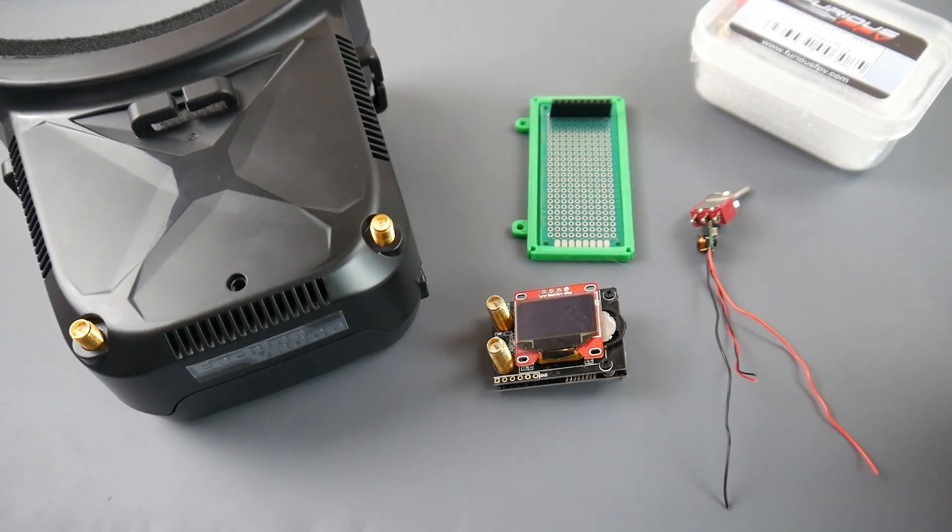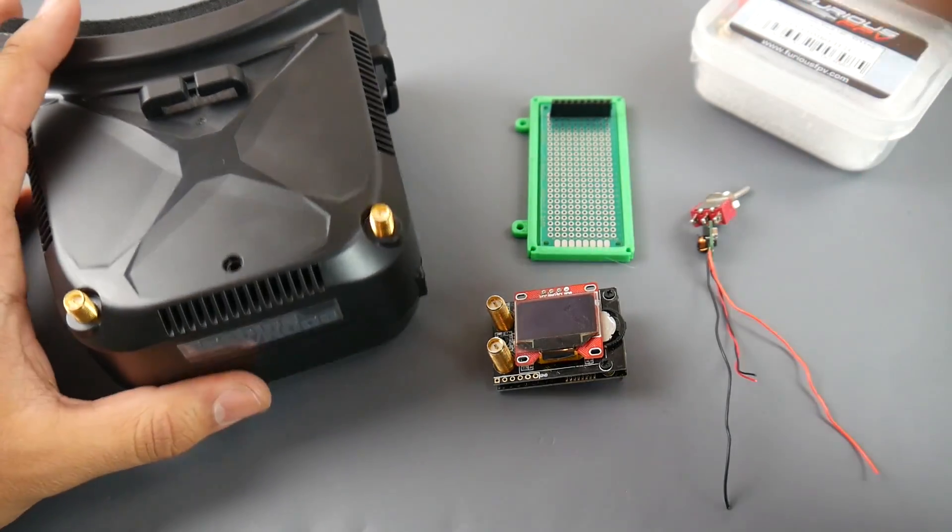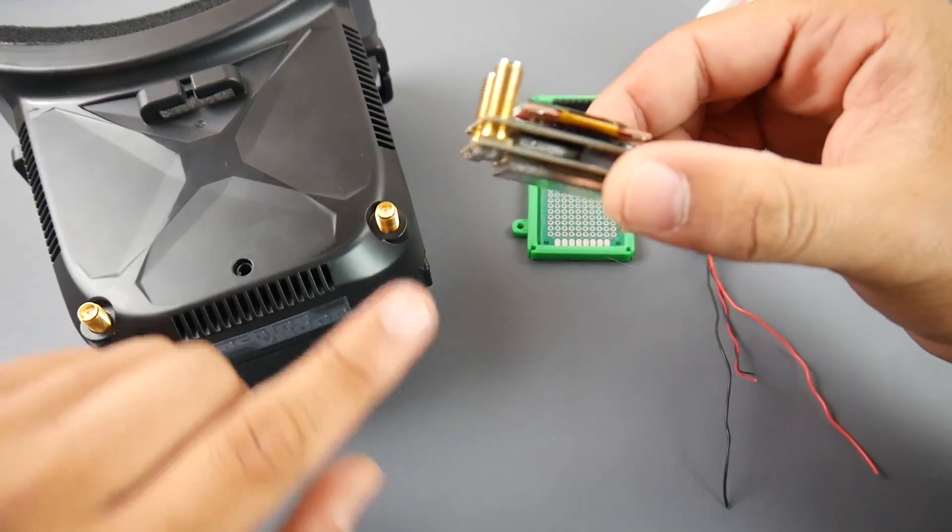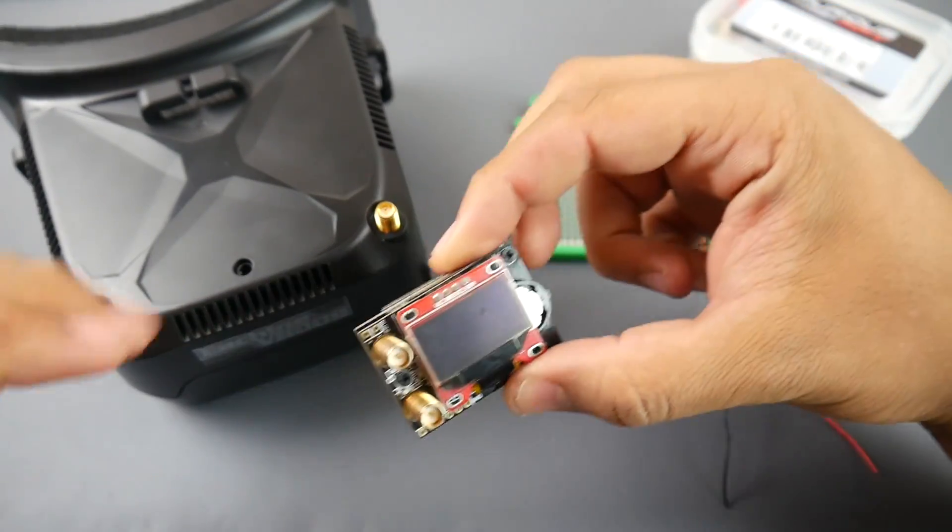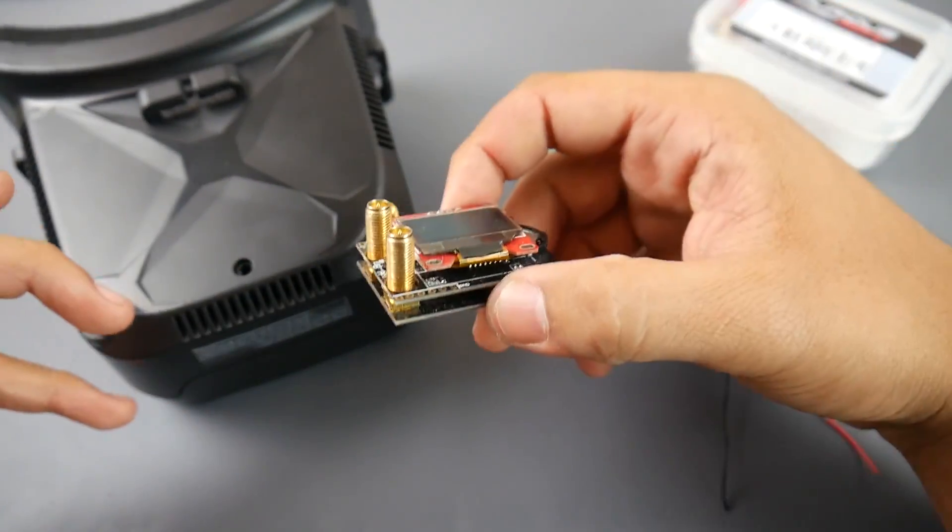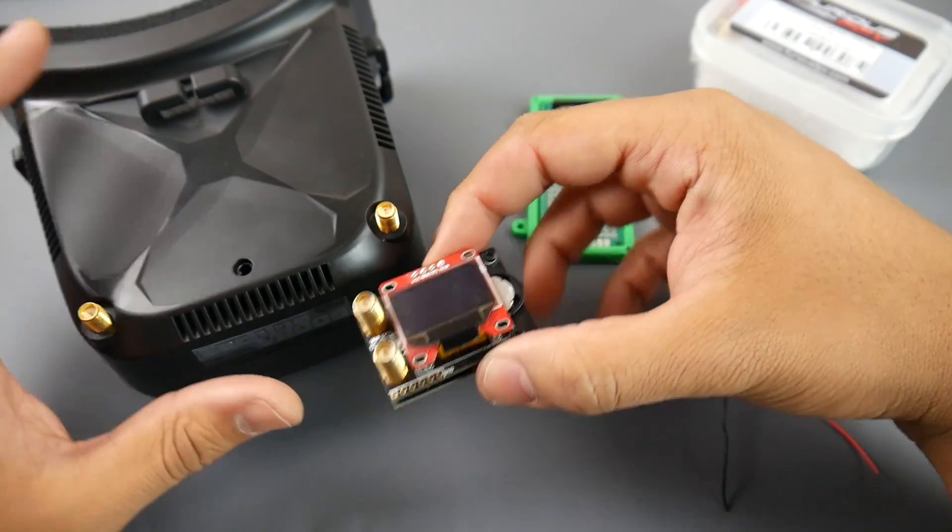Now a lot of people always ask me, well what's the benefit of this? Because for example, this one just has one receiver inside of it. However, these have two if you can see that one and two. So you'll have a diversity receiving module thus giving you better range, better video, and better penetration.